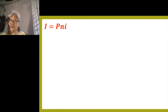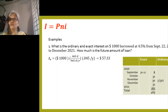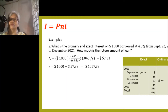Let us have some samples on the computation of interest. For example: what is the ordinary and exact interest on $1,000 borrowed at 4.5% from September 22, 2020 to December 2021? How much is the future amount? I have here a table to compute for the days considered in the loan.